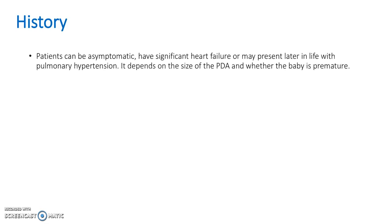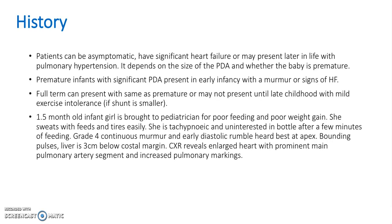We're going to go through some histories now. Let's see if you can pick out the parts which you think are important. A one-and-a-half-month-old infant girl is brought to the paediatrician for poor feeding and poor weight gain. She sweats with feeds and tires easily. She is tachypneaic and uninterested in the bottle after a few minutes. Grade 4 continuous murmur and early diastolic rumble heard best at apex. Bounding pulses. Liver is 3 centimetres below costal margin. Chest x-ray reveals enlarged heart with prominent main pulmonary artery segment and increased pulmonary markings.